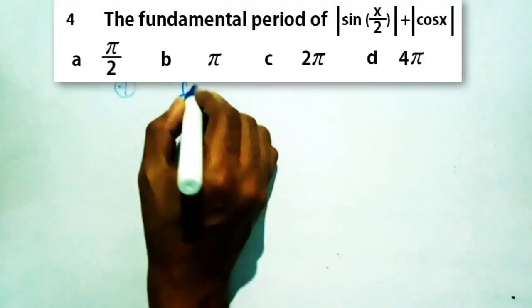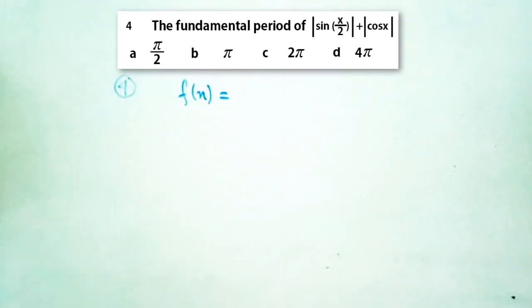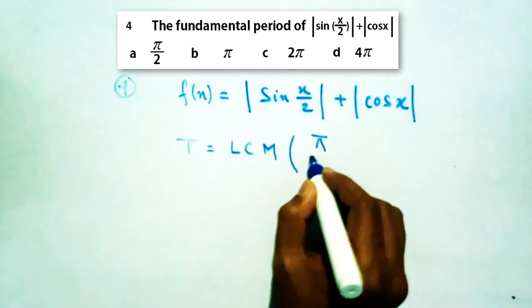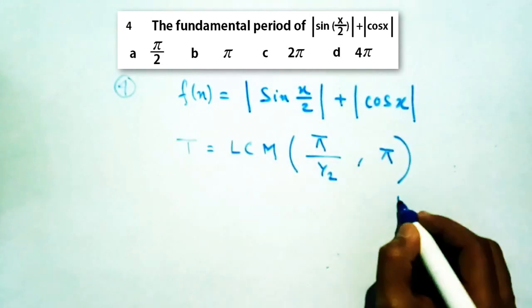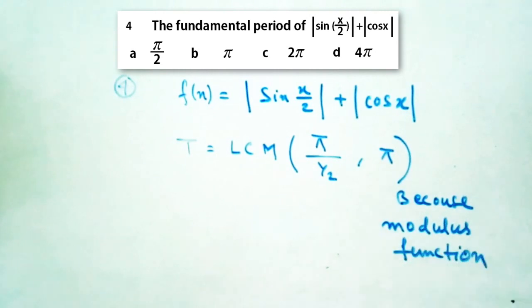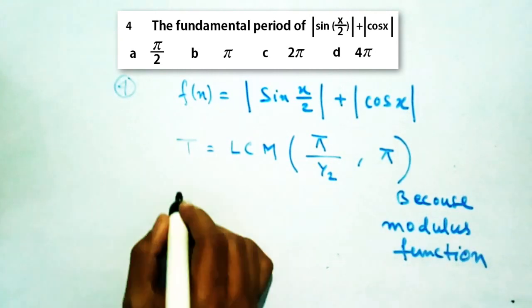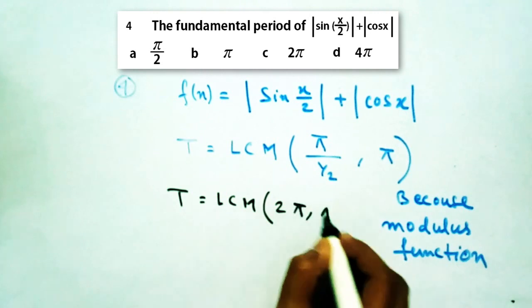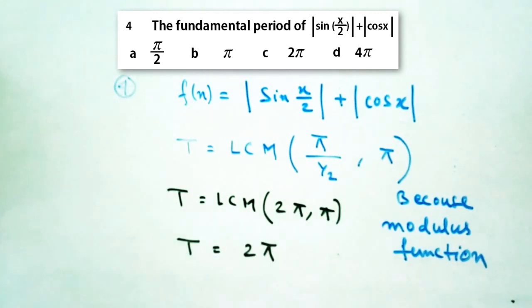Here we have to find the period of two modulus functions added together. So in this case, the period will be LCM of π/(1/2) and π, because the modulus function has a period of π and sin(x/2) will have a period of π/(1/2) because here the coefficient of x is 1/2. So the period of f(x) will be LCM of 2π and π, that is 2π.